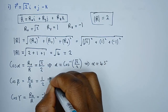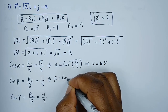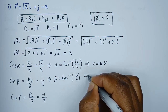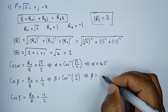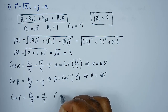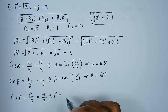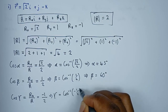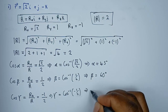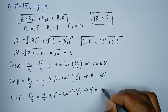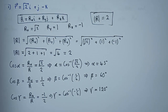For cos β = 1/2, this implies that beta equals cos⁻¹(1/2), giving an angle of 60 degrees. Lastly, cos γ is given by r_z over r: r_z is −1 and r is 2. This implies that gamma equals cos⁻¹(−1/2), and gamma equals 120 degrees, because this is in the second quadrant. So we have found the three angles.